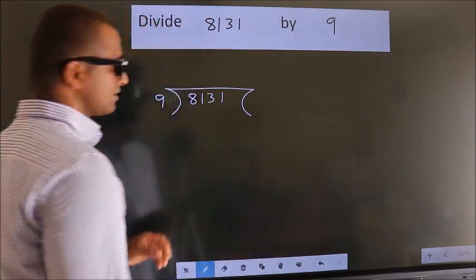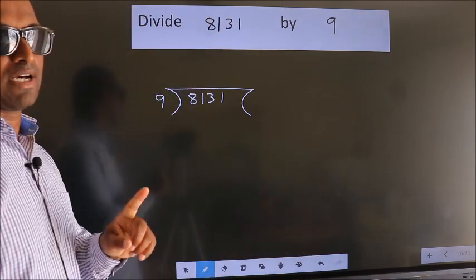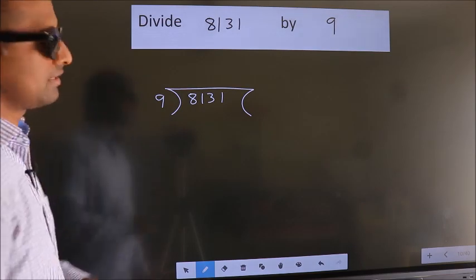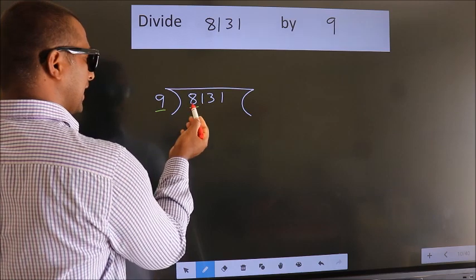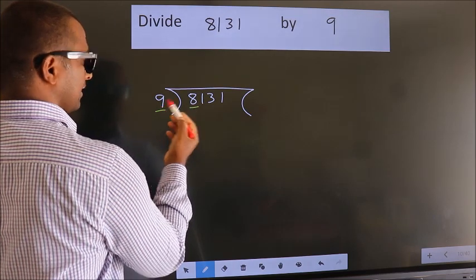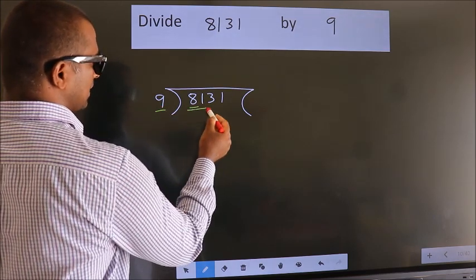This is your step 1. Next, here we have 8, here 9. 8 is smaller than 9, so we should take 2 numbers, 81.